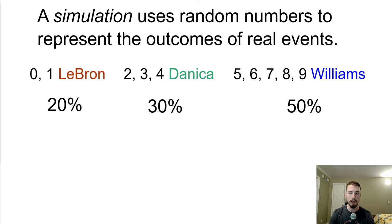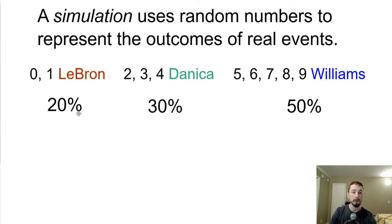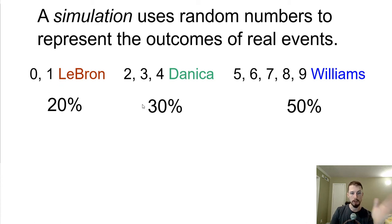Simulation uses random numbers to represent the outcomes of real events. We're going to use the digits 0 through 9, since all percentages end in 0. We assign 0 and 1 to LeBron — that's 20%. The numbers 2, 3, and 4 are assigned to Danica — that's 30%. The remaining digits 5 through 9 go to Serena Williams — that's 50%. The random integers used are from 0 to 9.